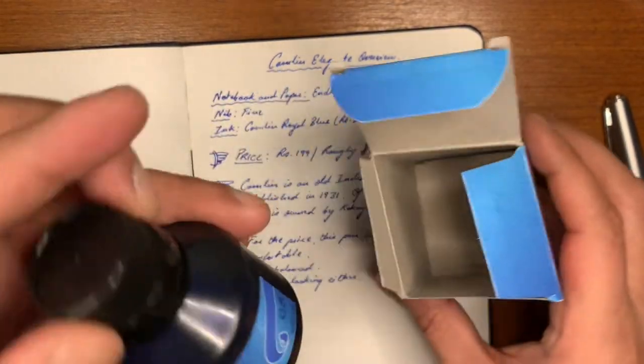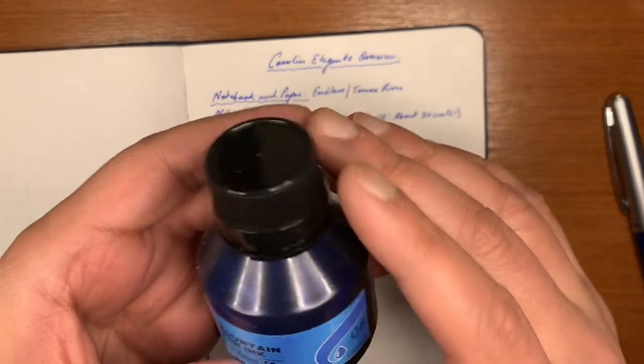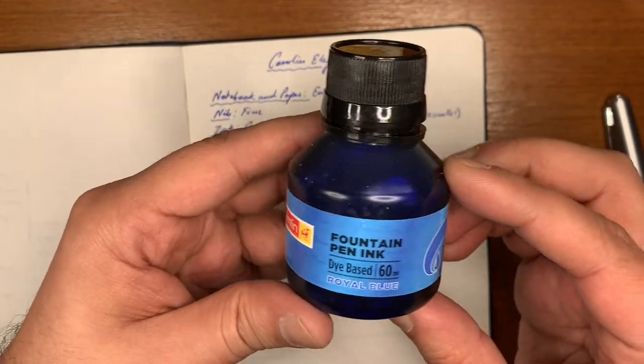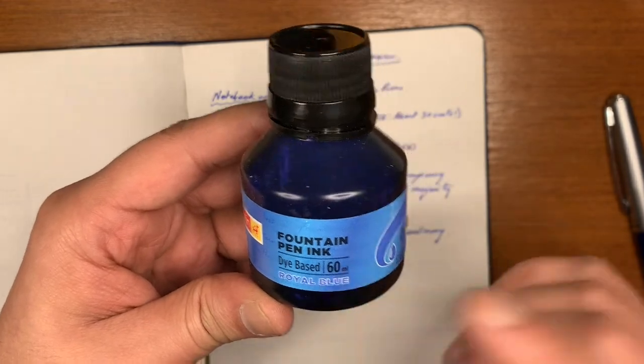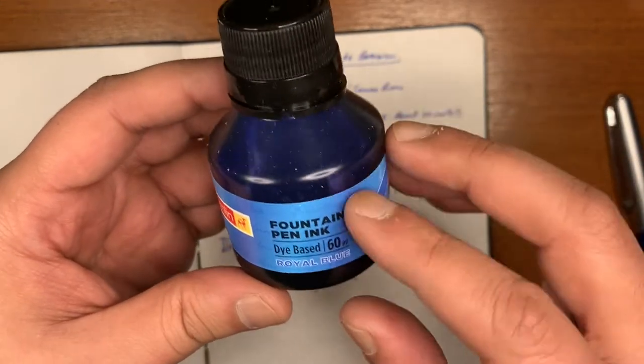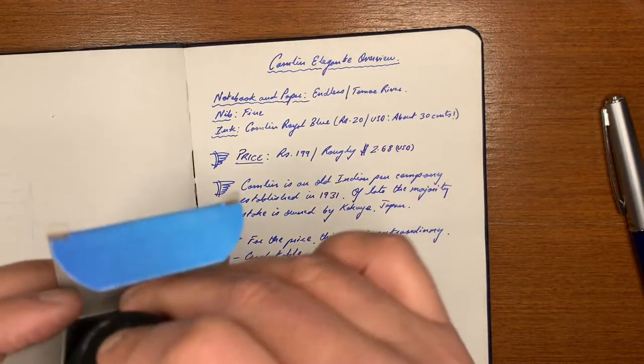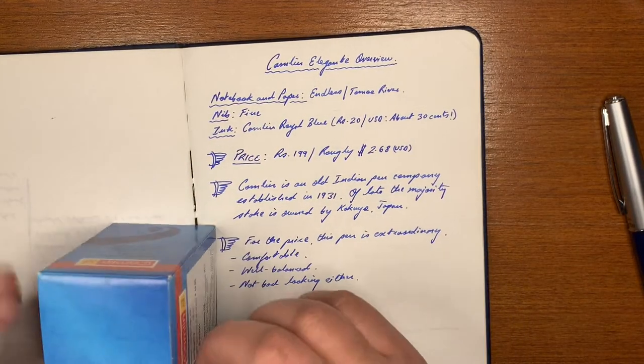It's very smelly and very metallic but reminds me of my school days. It comes in this plastic bottle and it's 60 ml. Quite extraordinary right? 60 ml for 20 rupees, roughly around 30 cents. So that's quite something. And it has a nice color, a nice traditional royal blue.